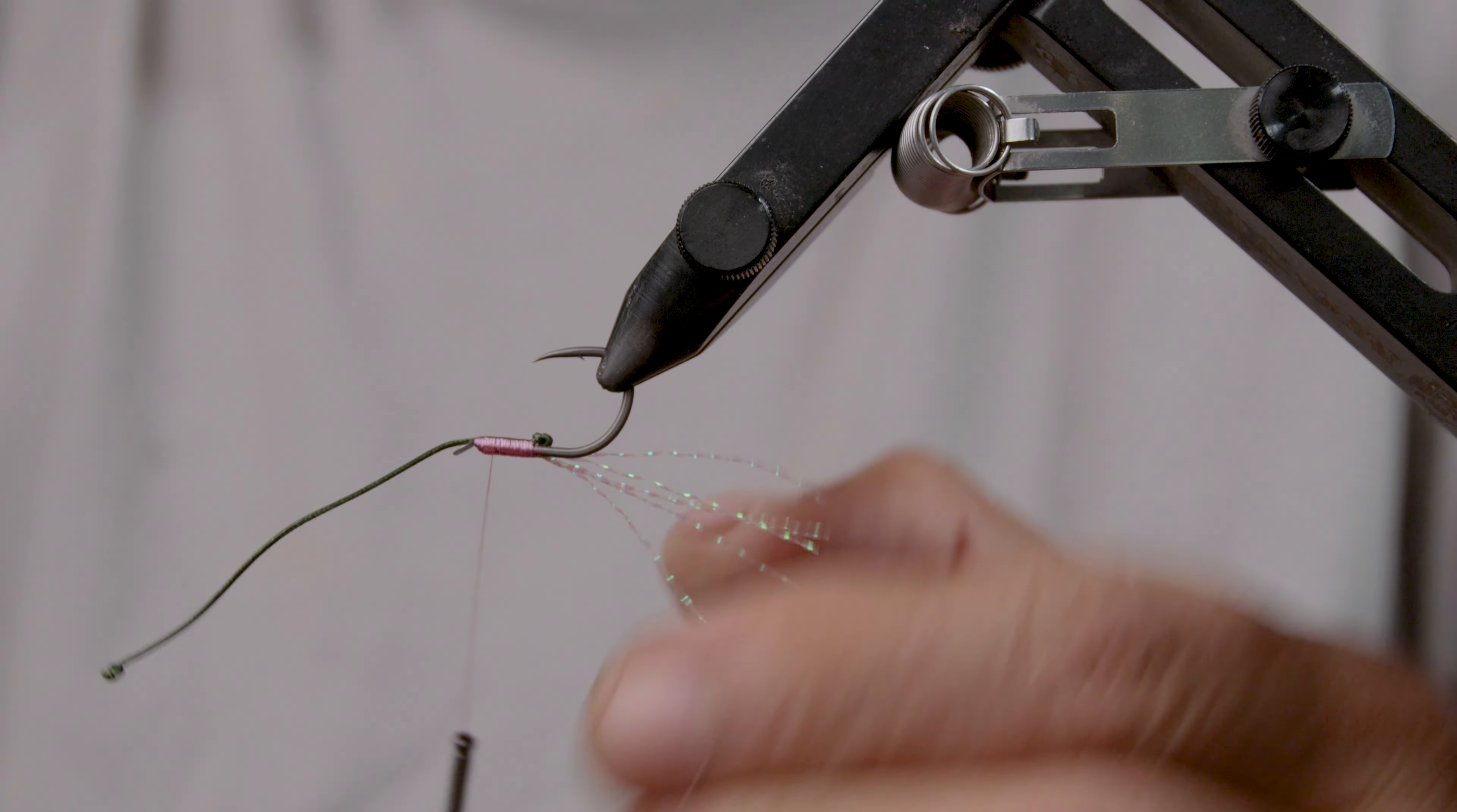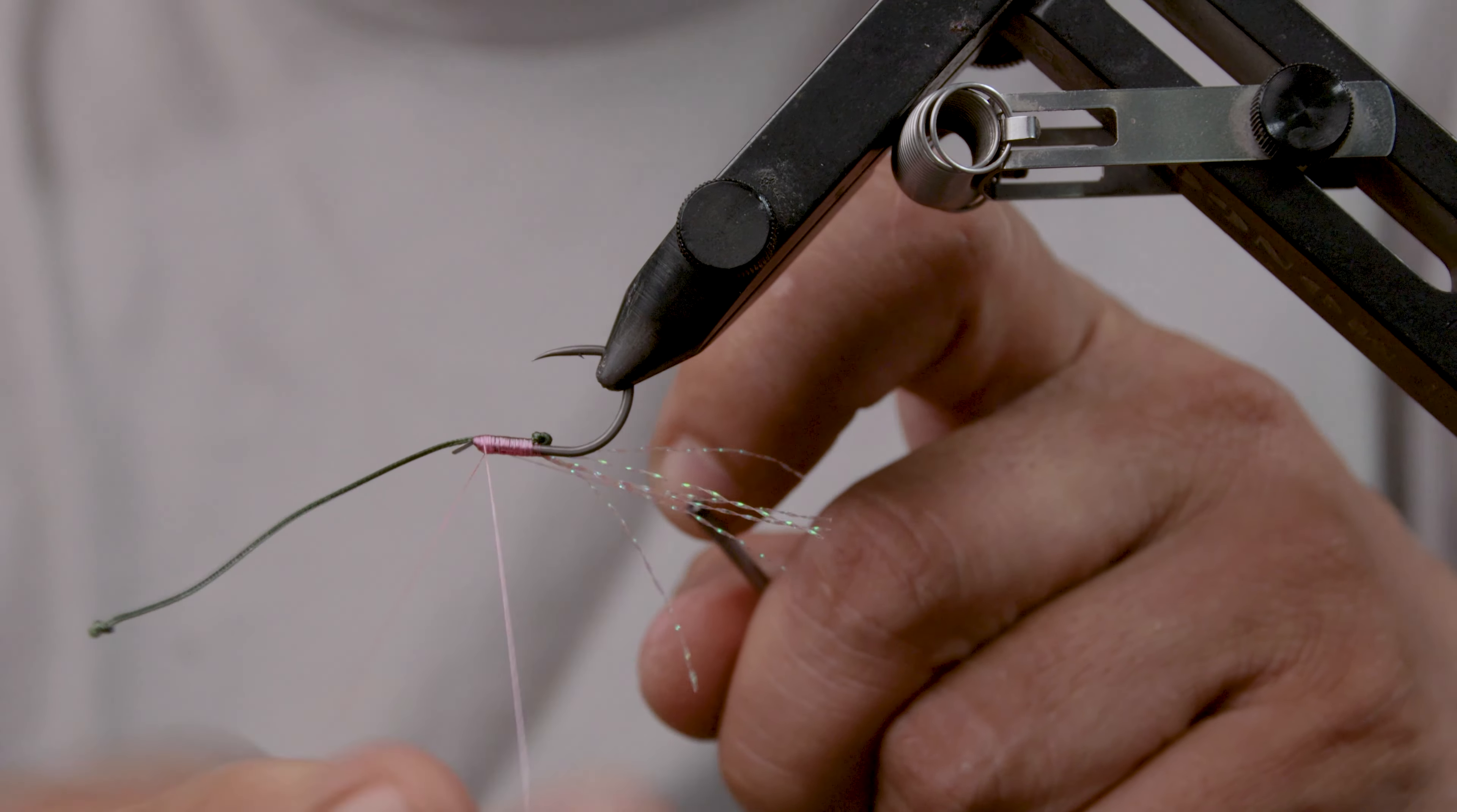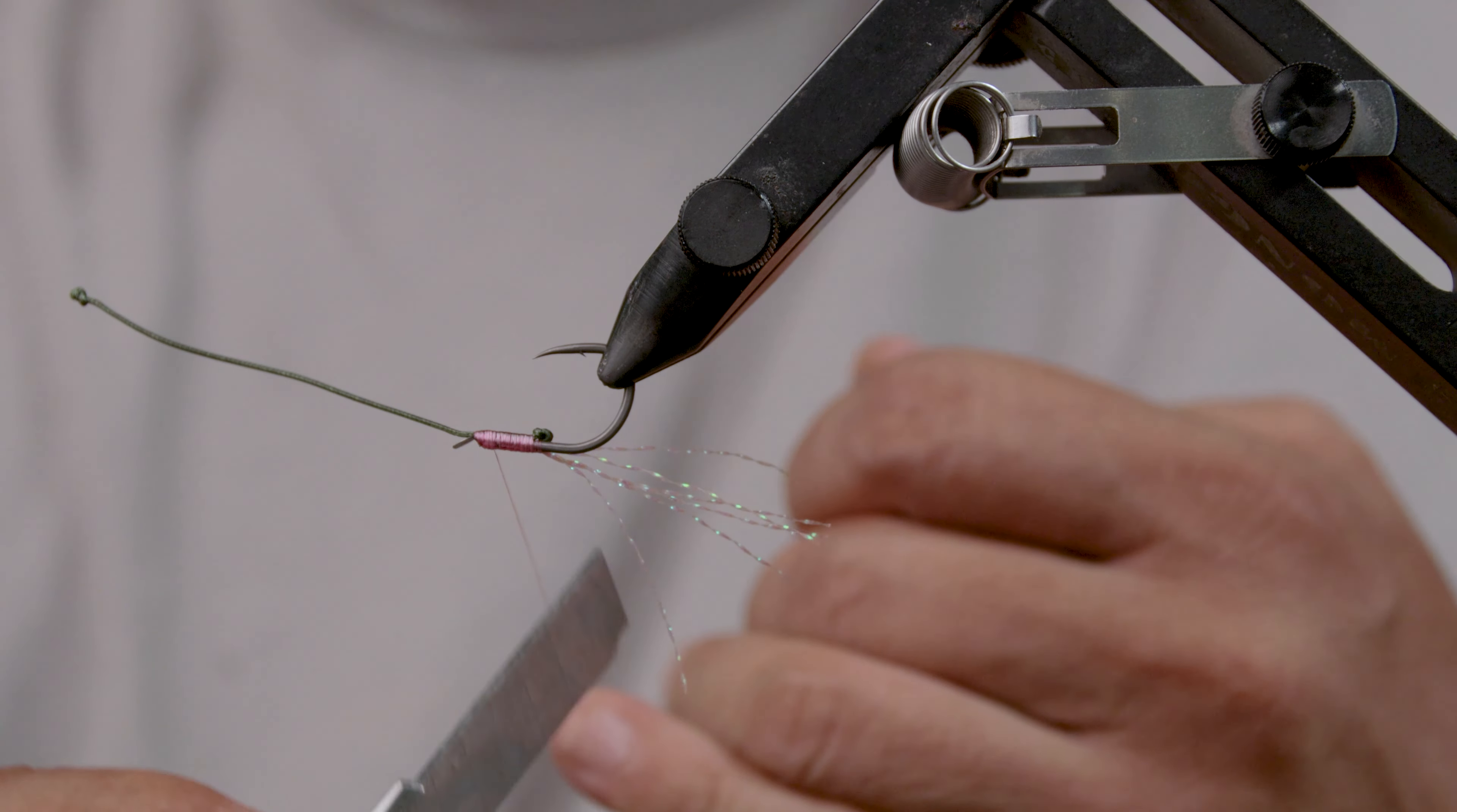You pretty much only need about two or three of these, and then you could tie off. I'm using a whip finish, I'm using my hands, but you could use half hitches, you could use a tool for this. And it is that simple. Obviously after this, you could super glue everything.